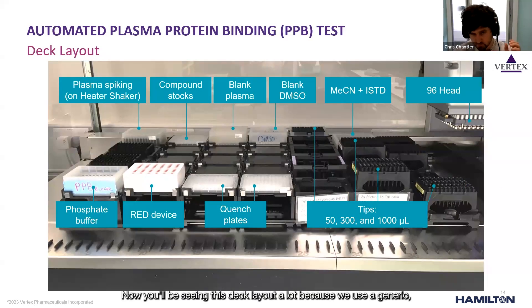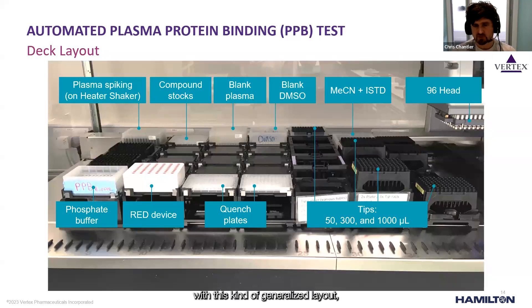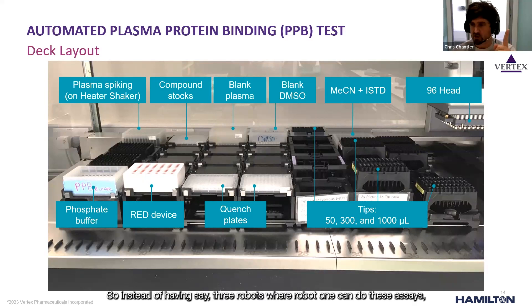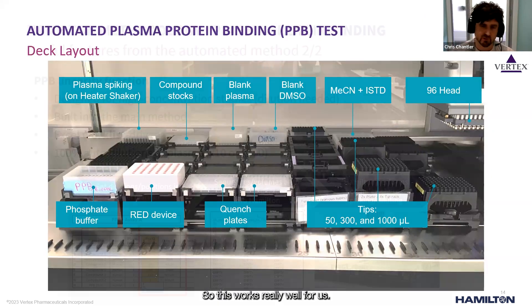Let's look at the deck layout. We use a generic and versatile deck layout for all of our methods, with just a few exceptions that have special requirements. The reason we do this is that a generalized layout lets us absorb many different methods. Instead of having three robots where each can only run certain assays, all of the robots can run all the same assays — giving you redundancy and making method transfer much easier.